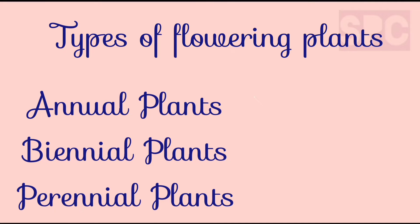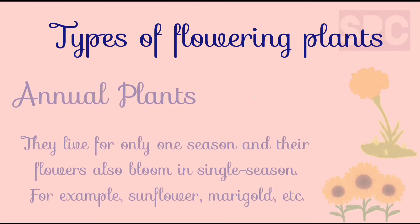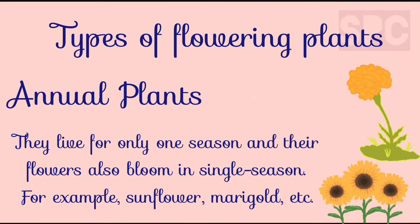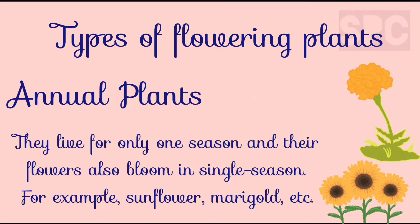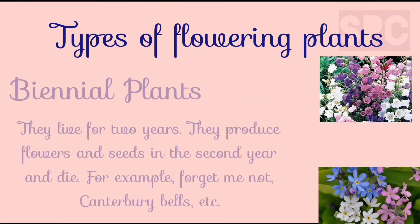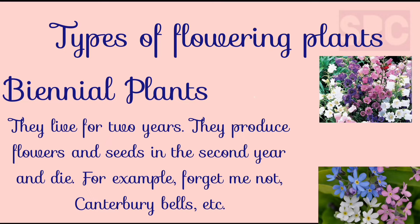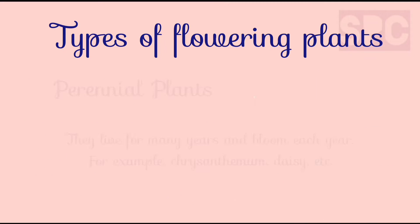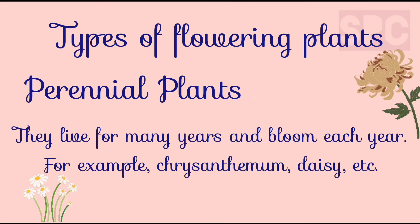Annual plants are the plants which live only for one season and their flowers also bloom in a single season only, for example sunflower, marigold, etc. Biennial plants are those plants which live for two years. They produce flowers and seeds in the second year and then they die, for example forget-me-not plant and Canterbury bells. Whereas perennial plants are the plants which live for many years, for example chrysanthemum, daisy, etc.